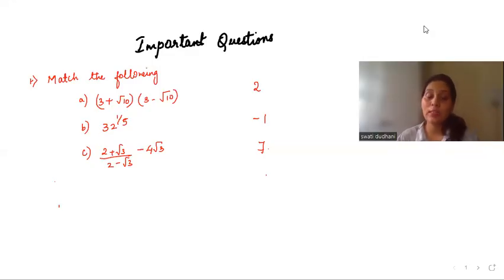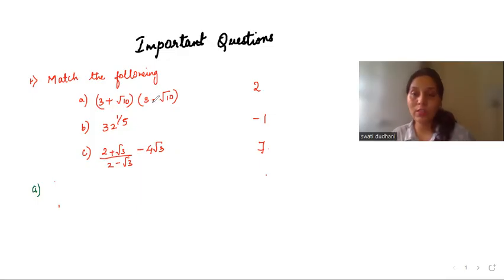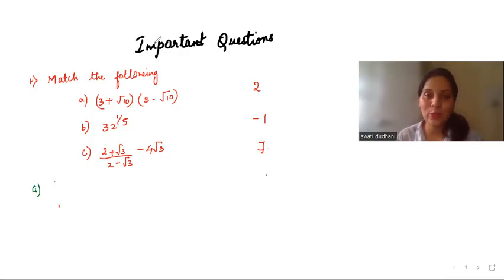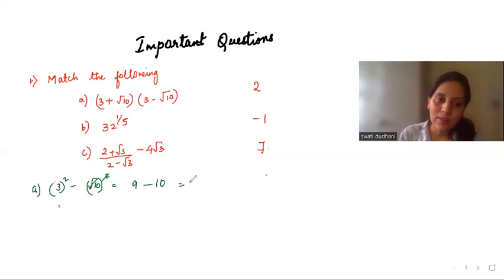In this video we will see the most important questions of Class 9 Chapter 1: Number System. First question — match the following. Let us take the first part: (3 + √10)(3 - √10). This is in the form of (a + b)(a - b) which equals a² - b², so we get 3² - (√10)² = 9 - 10 = -1.